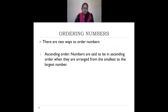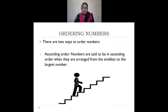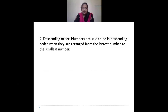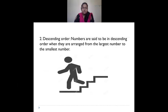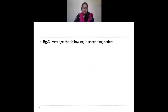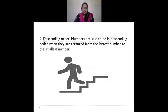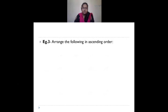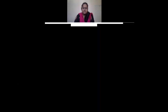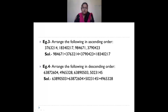Then we saw ordering of numbers. Ascending order means numbers are arranged from the smallest to the largest. Descending order means numbers are arranged from the largest to the smallest. We saw different examples for both ascending and descending order.